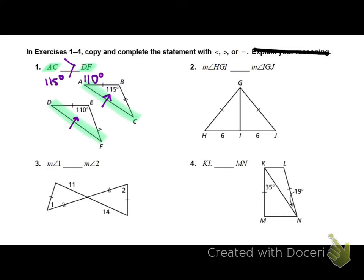Number two, we got HGI. What's the vertex of HGI? G. That's the corner of that angle. So we're looking at this angle. And then we're comparing it to IGJ. What's the vertex of IGJ? G again. So we're looking at this angle. So HGI is across from 6, IGJ is across from 6. So that means these two are equal. We have angle 1 is across from 11. Angle 2 is across from 14. So is angle 1 less than, greater than, or equal to? Less than.